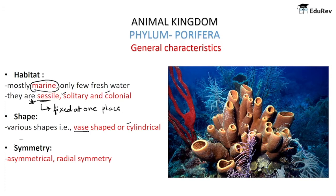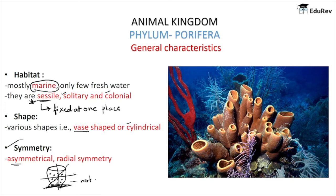Coming to symmetry, sponges are asymmetrical. If you cut the sponge from any plane — vertically, horizontally, or diagonally — the pieces are not equal to each other. That is why they are considered asymmetrical. But with evolution, some sponges have become radially symmetrical from asymmetrical.